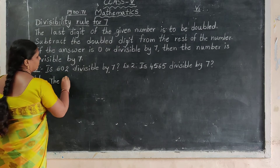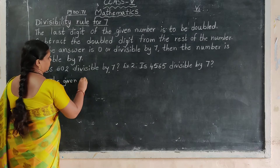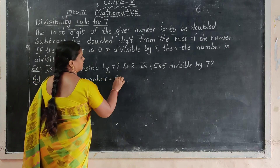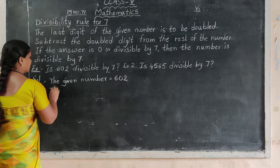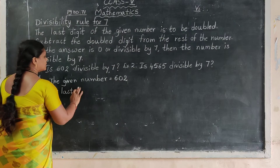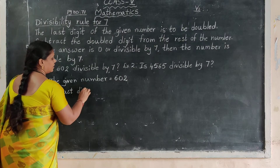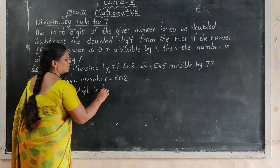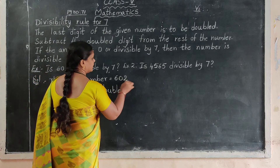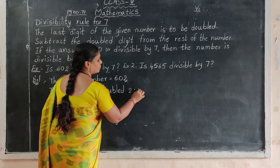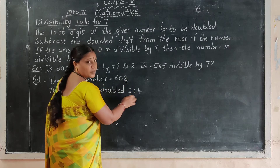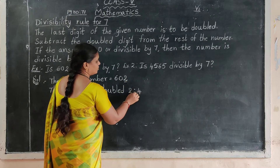The given number is 602. The last digit is 2. Double the last digit: 2 plus 2 equals 4.